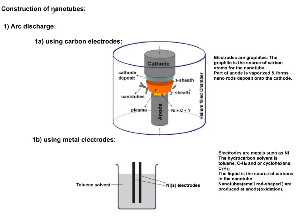In this video, I'm going to show you one way of making nanotubes known as arc discharge. Arc is the electric arc that we are talking about. You either have the possibility of using carbon electrodes or metal electrodes.